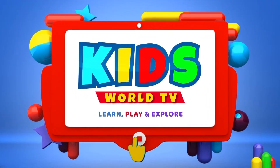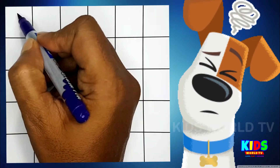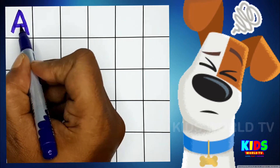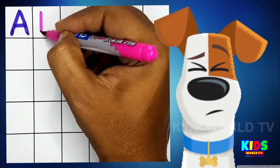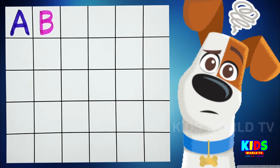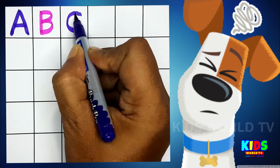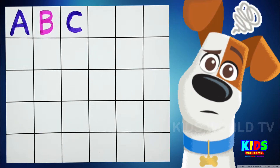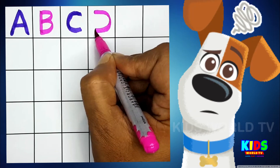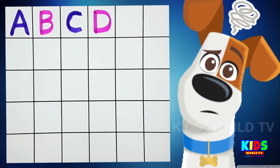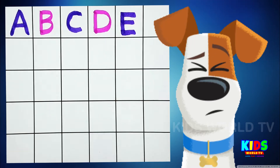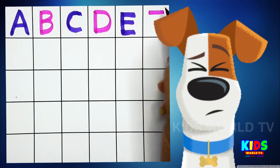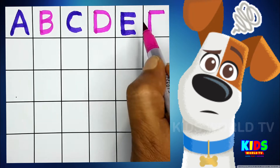Kids World TV. A for Apple, B for Ball, C for Cat, D for Dog, E for Elephant.